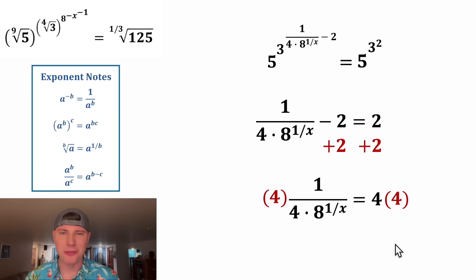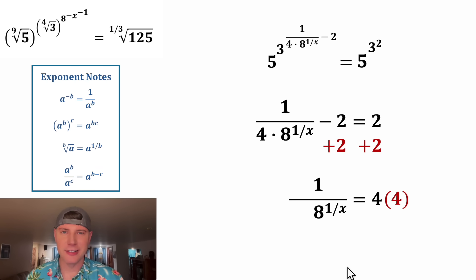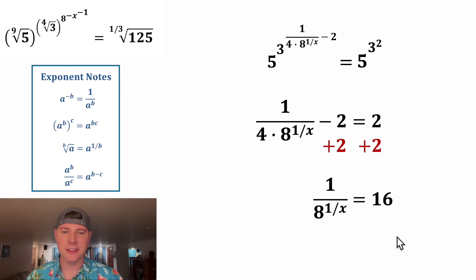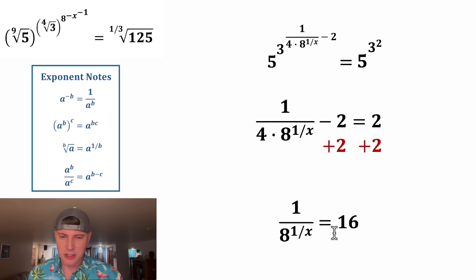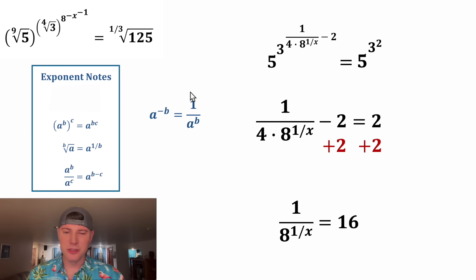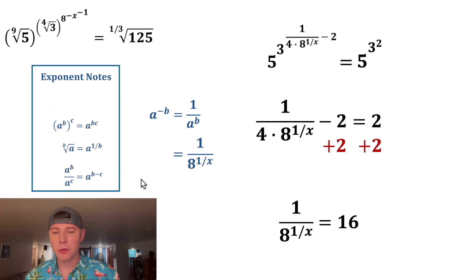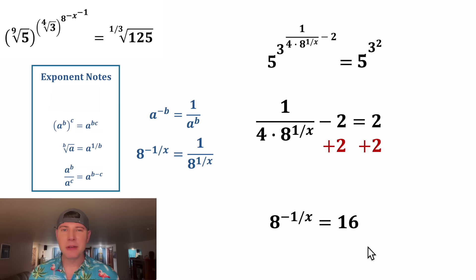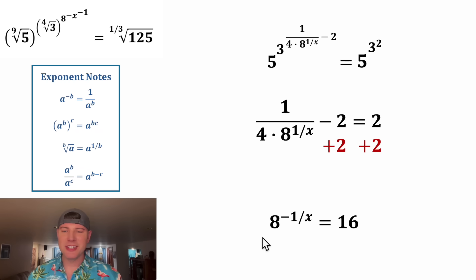Next, we can multiply both sides by four. On the left-hand side, this four and this four will cancel each other out. On the right-hand side, four times four is 16. Let's give ourselves a little more room and move this eight to the top using these rules backwards. One over eight to the power of one over x equals eight to the power of negative one over x.